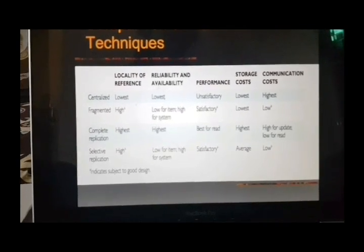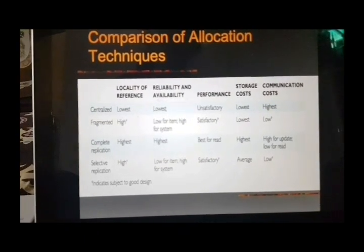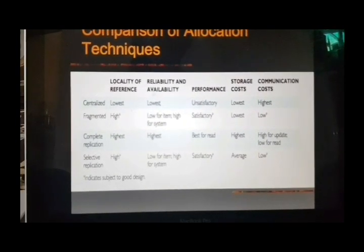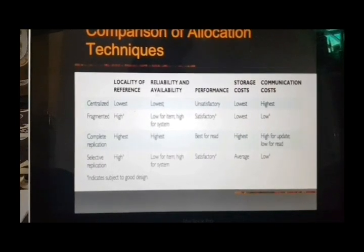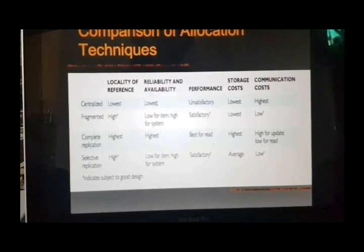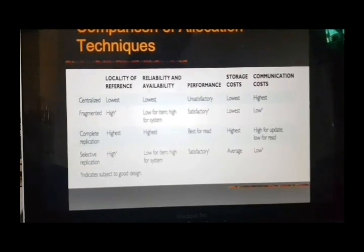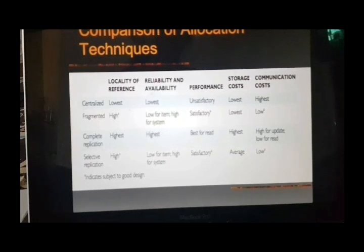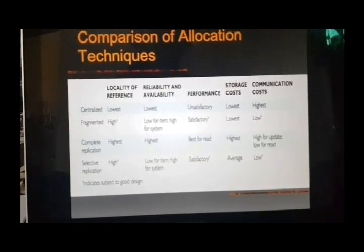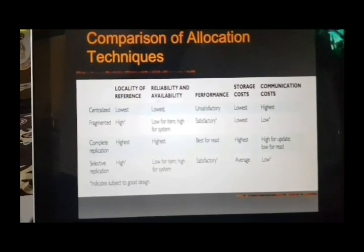For complete replication, the full data — say 10 GB — is stored at each and every site. Locality of reference is highest, and reliability and availability are again highest since there is a backup at every place. Performance is best for reads, but updating is expensive because we have to update at each and every site. Storage costs are highest because the data is stored everywhere. Communication cost is high during updates because one cycle is needed to fetch the data, update it, and store it back.